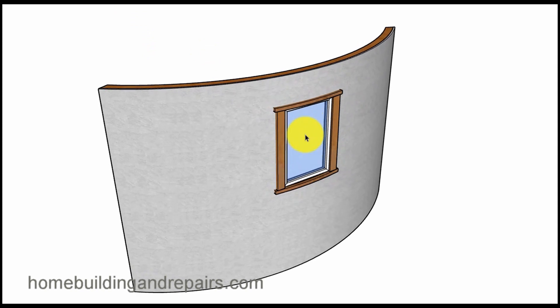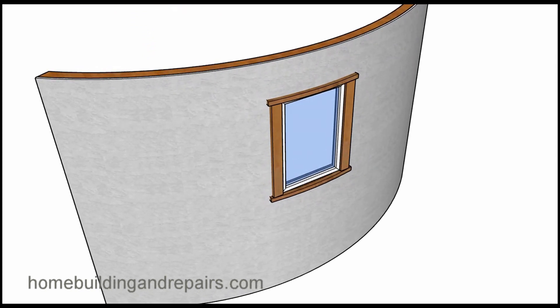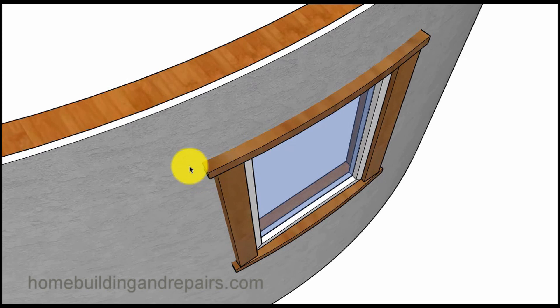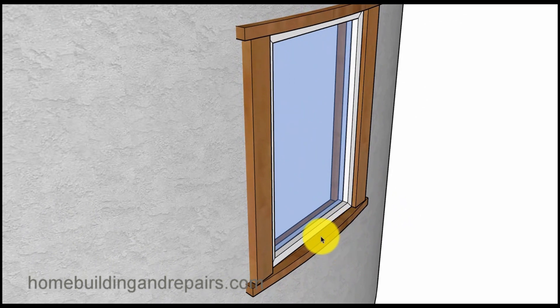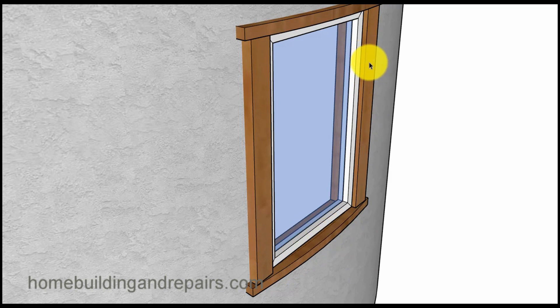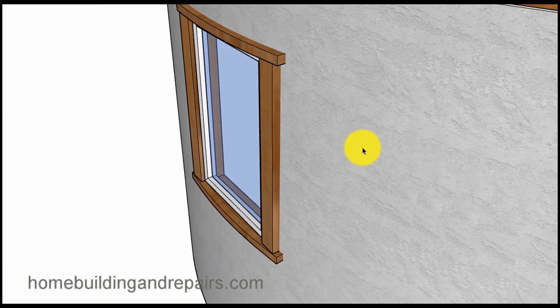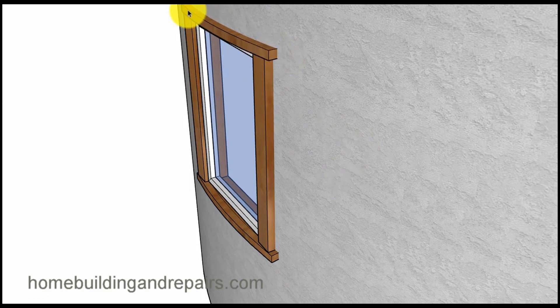We can see here where the curved stucco matches the curved trim at the top and at the bottom. Here we can see that it is straight, everything looks good, side pieces look good. You can see here where it's curving around, curving around again. Nice shot of it there and that is it for the outside.